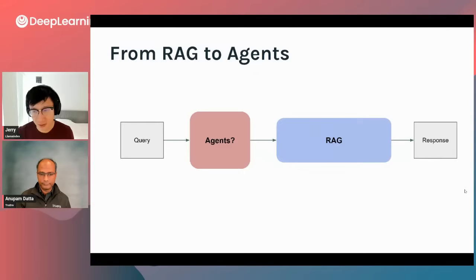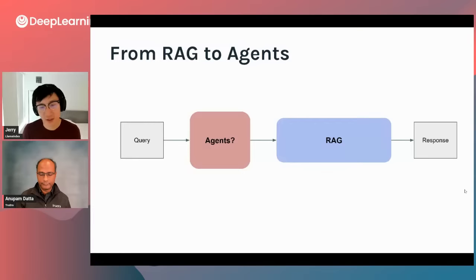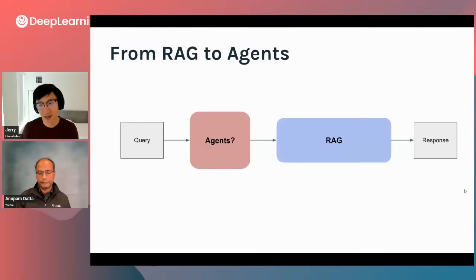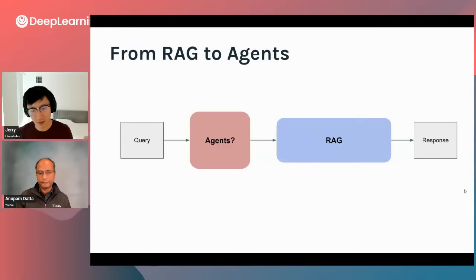In a traditional RAG setup, the LLM call occurs at the end — you do retrieval (typically top-K embedding lookup) and then feed it to the language model. But the agent idea is: what if we use the LLM at the beginning as well, to take in the query and figure out how to make use of underlying tools — whether a RAG pipeline, an external API call, or some other service? We think of agents as wrapping a layer on top of RAG that dynamically enriches the query and allows this higher-level abstraction to use tools in the right way.